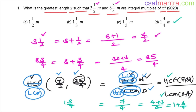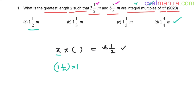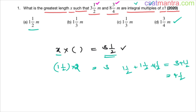Now let's make use of the options. We need x into some integer to equal 3½. Let's take x as 1½. So 1½ × 2 = 3, but we need 3½. If we add one more 1½ we get 4½. So there's no way to get 3½ using integral multiples of 1½. Eliminate option A.